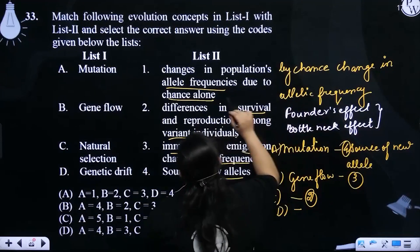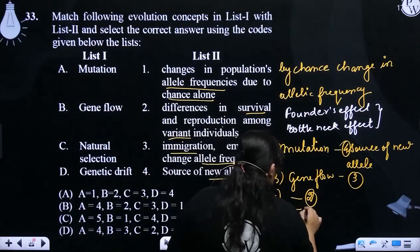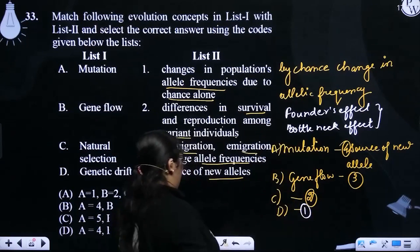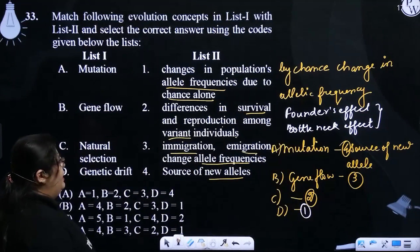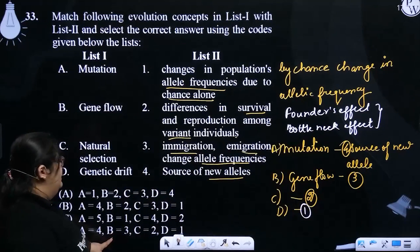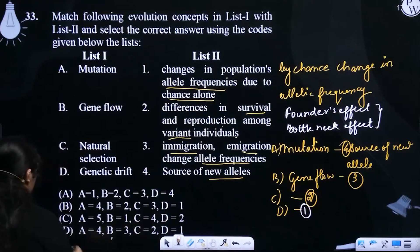So random change is genetic drift. D with one, A-4, B-3, C-2, and D-1—option D is the right answer.